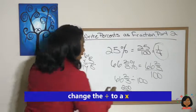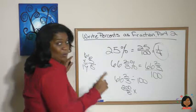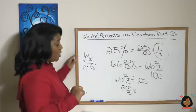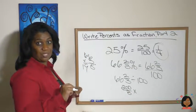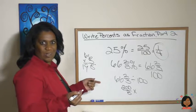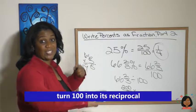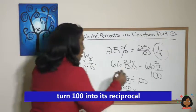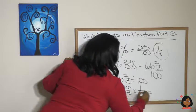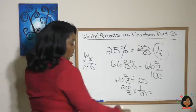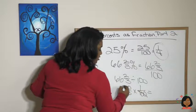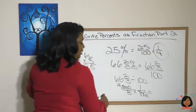So that went to an improper fraction. Our division sign we're gonna flip that to a multiplication sign. You saw that when we do division of fractions. Now if that goes to a multiplication sign, what happens to the 100? Ah, we change it to its reciprocal, so it's gonna be 1 over 100.